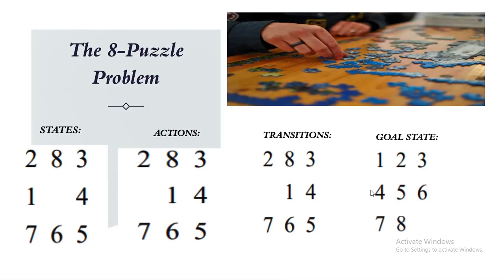Next is transition that represents the changes in states that result from taking an action. For example, if the action is to slide tile one to the right from the above state, then the resulting state is this. And the last one is goal state that represents the target configuration that needs to be achieved.